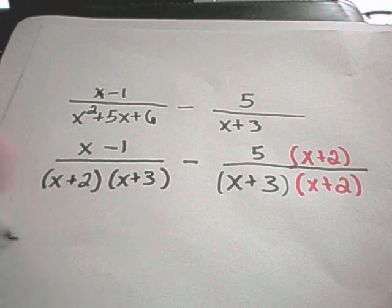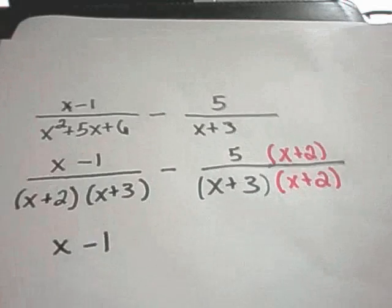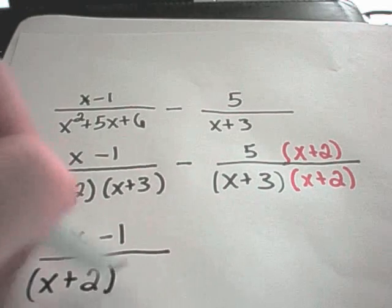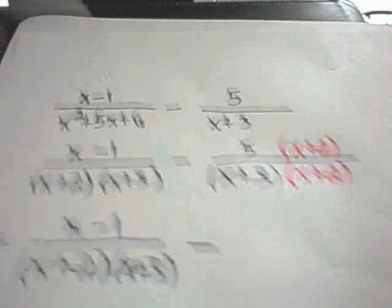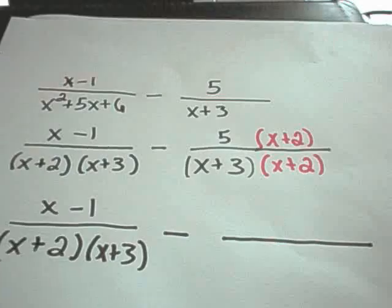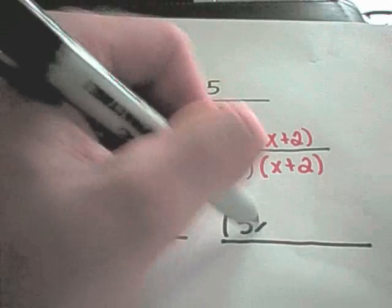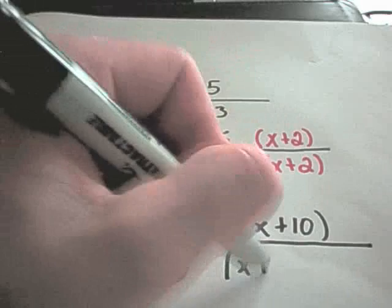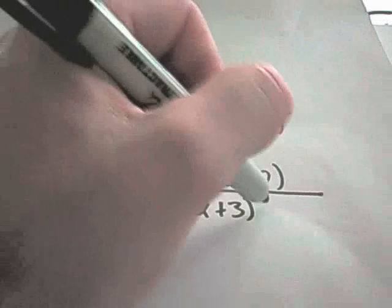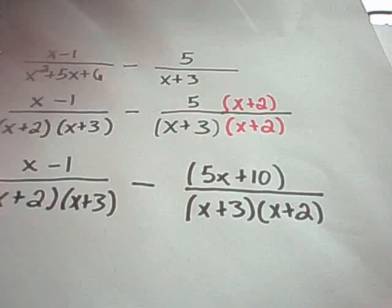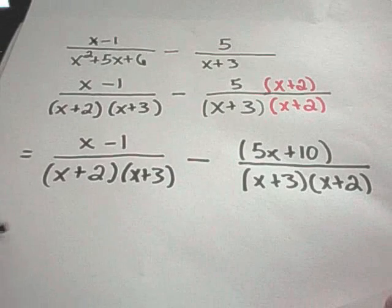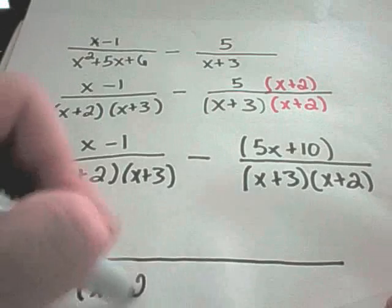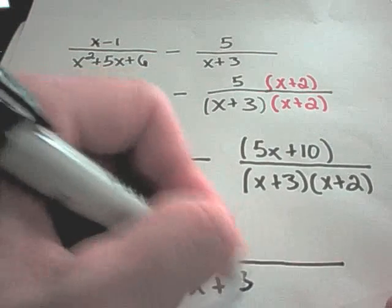So on the first part, I'm just going to have x minus 1 over x plus 2 times x plus 3. There's my minus sign. And I'm going to go ahead and distribute in the numerator. 5 times x is 5x. 5 times 2 is positive 10. And then still on the bottom, I have my x plus 3, x plus 2 term.